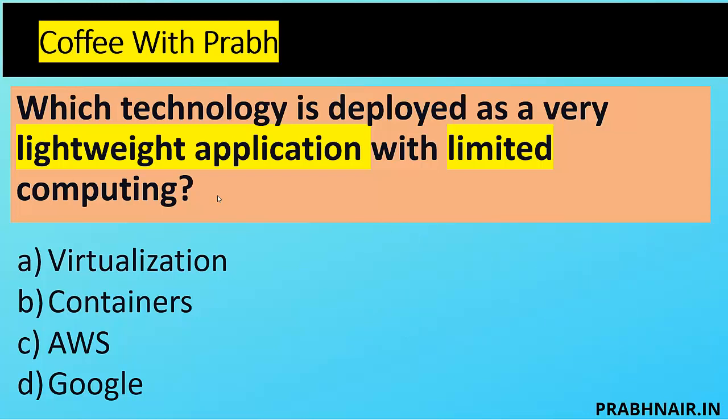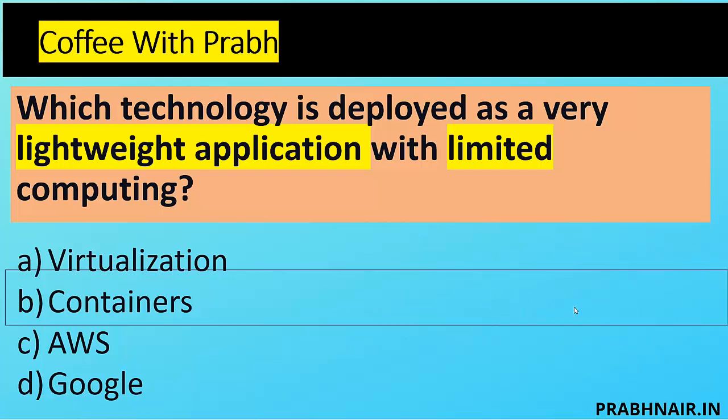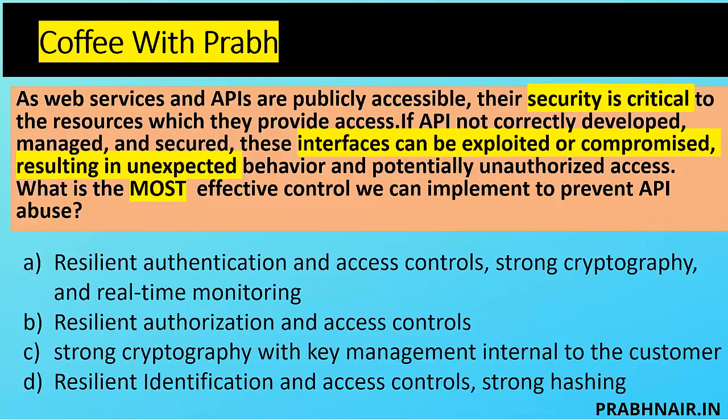With virtualization you'd need to move the entire machine, which is more expensive. That's why the answer here is B — container.